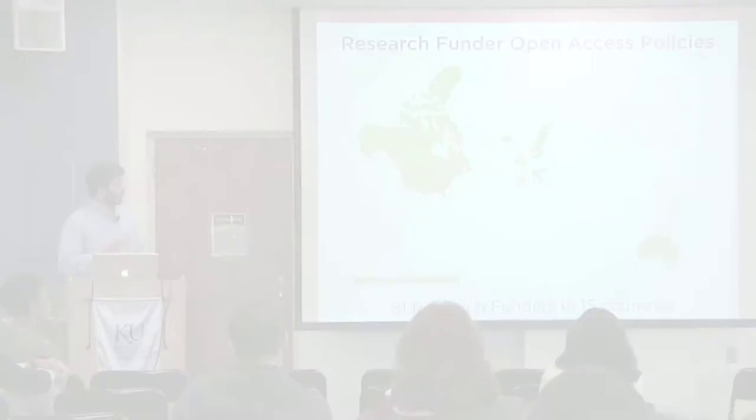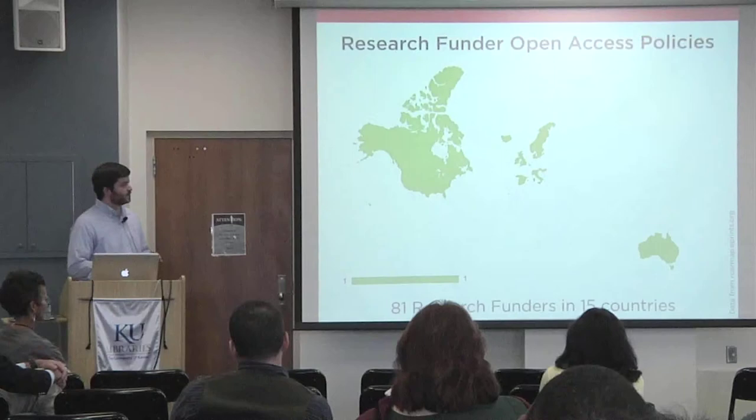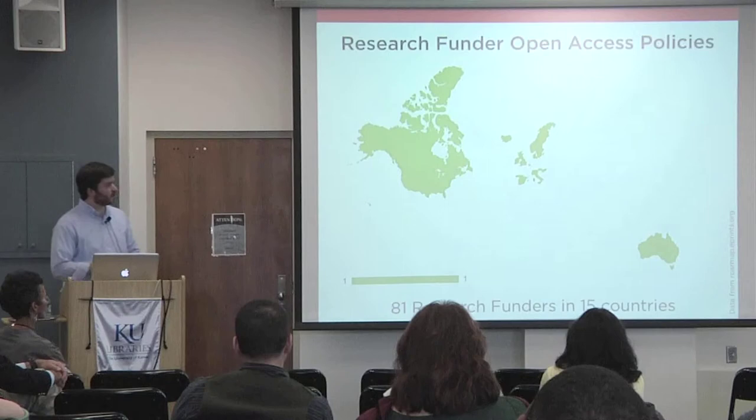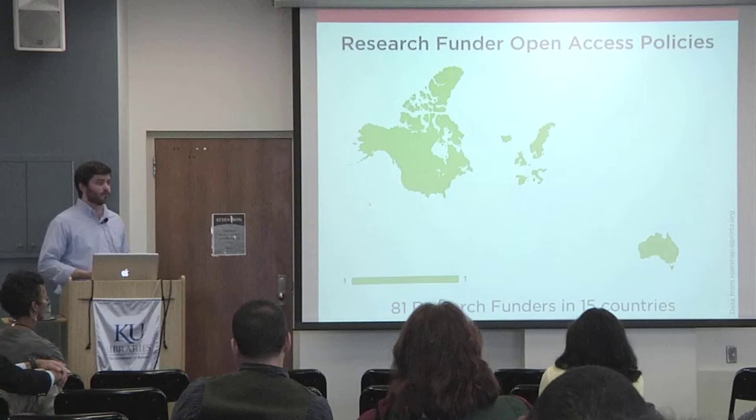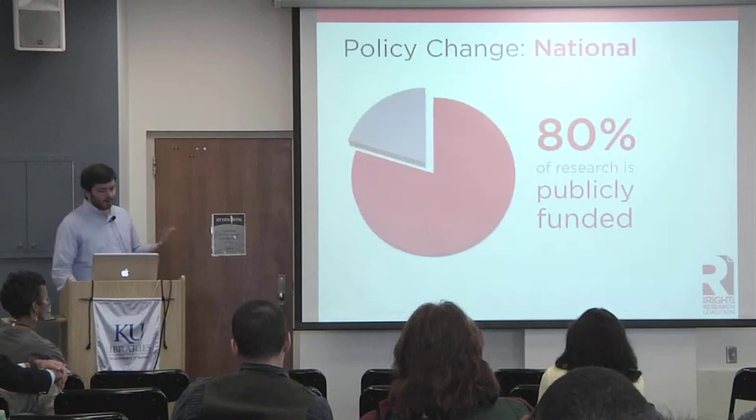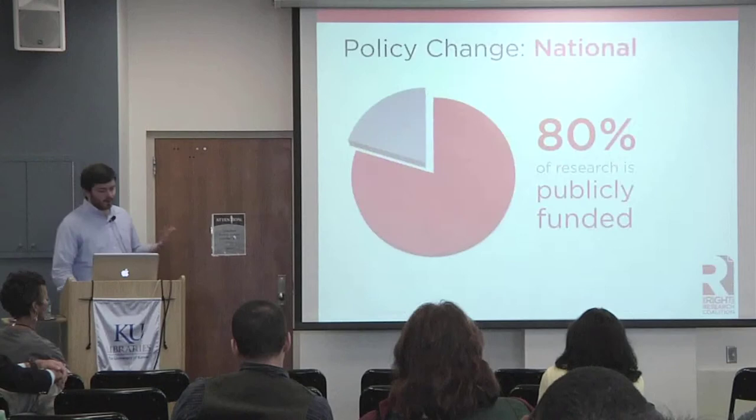The next level up of open access policies is at the research funder level. We now have 81 research funders in approximately 15 countries around the world that have these policies, particularly in the United States and Western Europe which fund quite a bit of research. As I mentioned earlier, 80% of research is publicly funded, and we would like to see that map grow so all publicly funded research is made publicly available to the people who funded it.